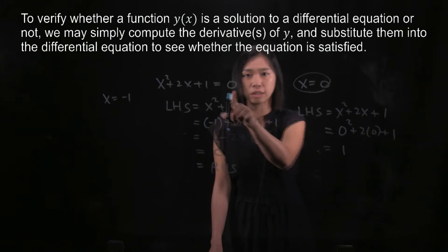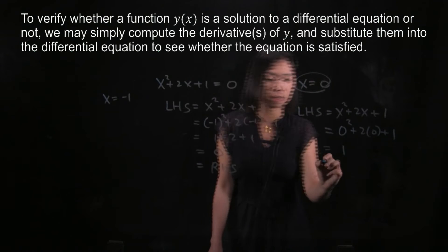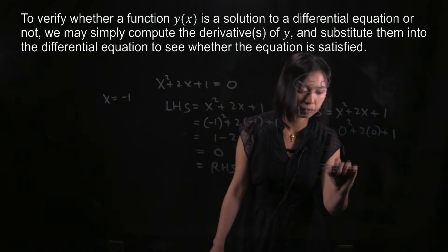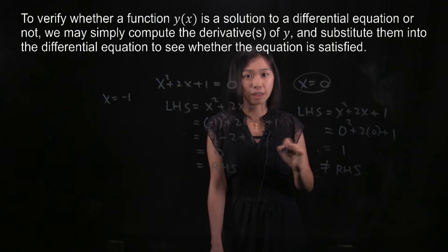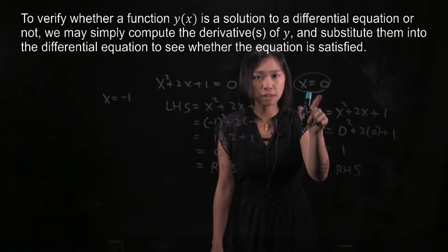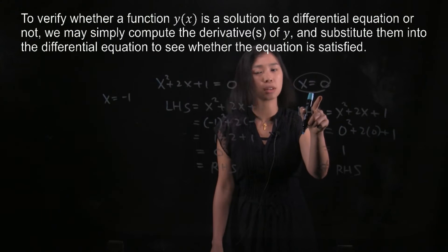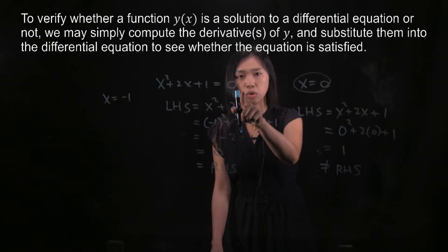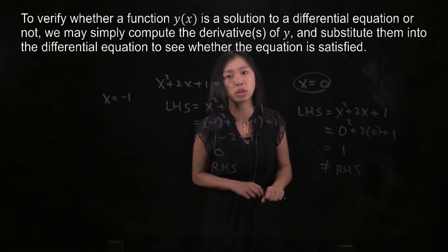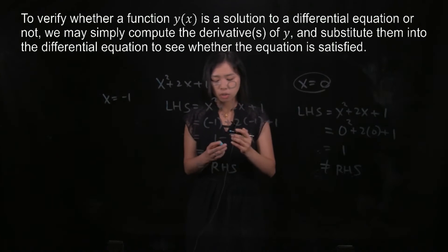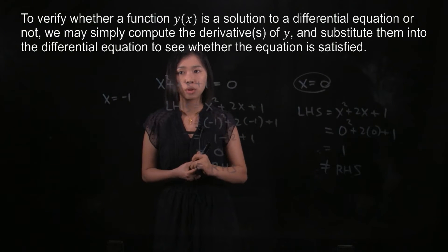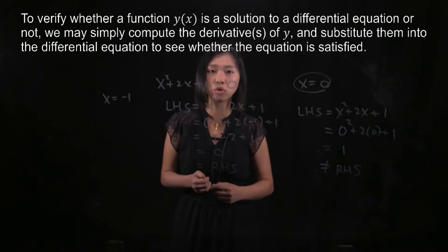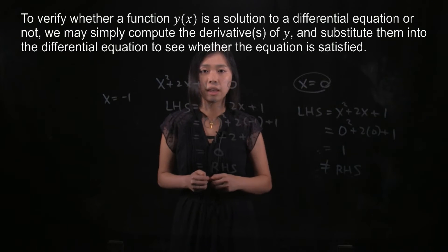So 1 is not the same as the right hand side. Therefore x equals 0 is not a solution to this quadratic equation. So how does this relate to the solutions of a differential equation?